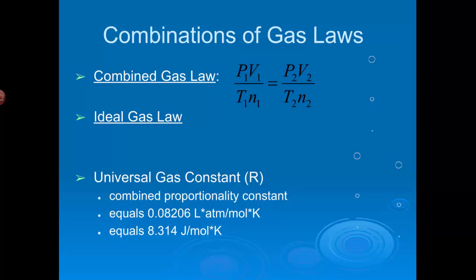However, probably the more useful gas law is something called the ideal gas law, which is represented by PV equals nRT, where P is pressure, V is volume, N is the number of moles, R is something called the universal gas law constant, and T is temperature in Kelvins, of course.